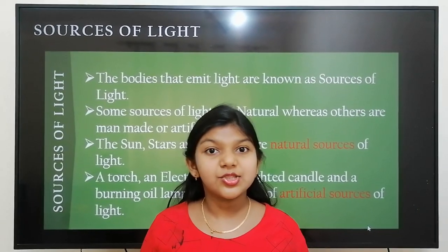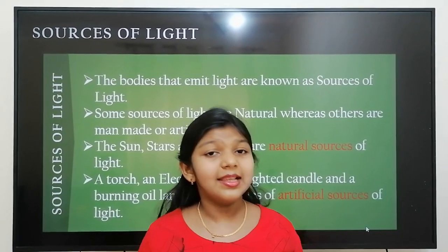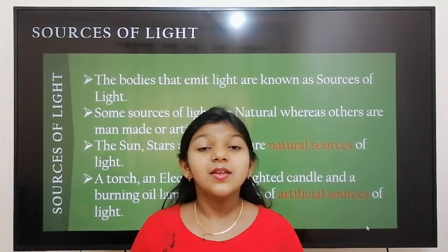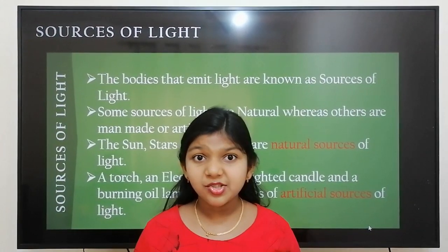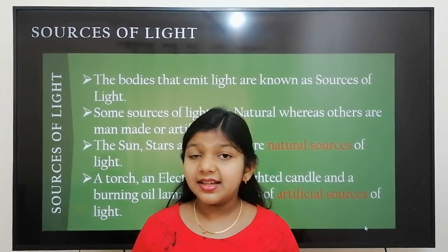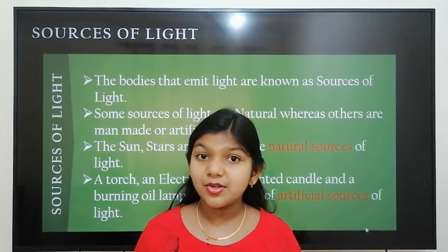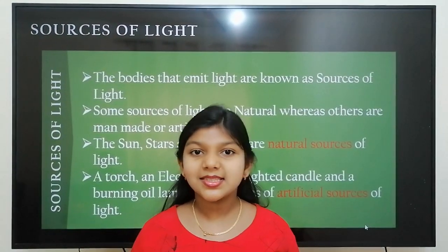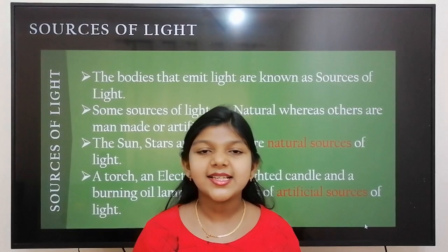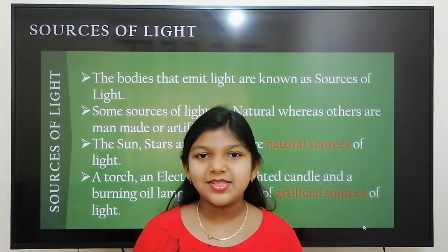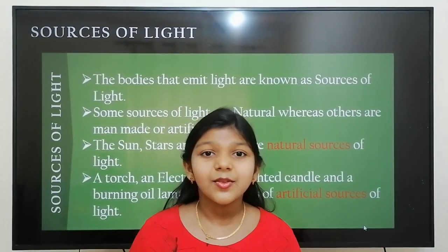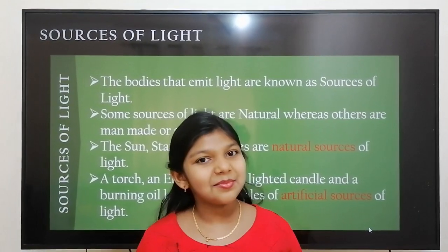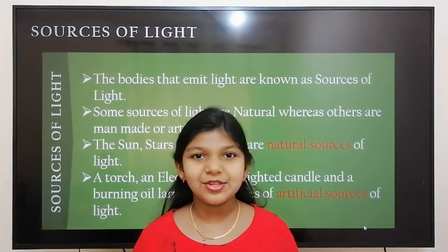The bodies that emit light are known as sources of light. Some sources of light are natural whereas others are man-made, also known as artificial sources. The sun, stars, and fireflies are some examples of natural sources of light. The torch, electric bulb, and lighted candle are some examples of artificial sources of light.